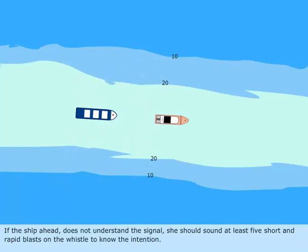If the ship ahead does not understand the signal, she should sound at least five short and rapid blasts on the whistle to know the intention.